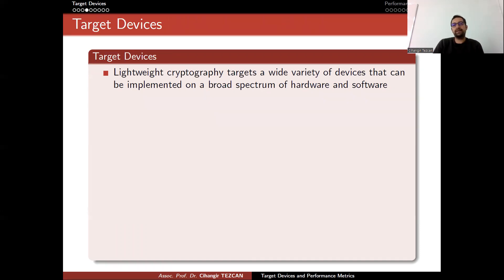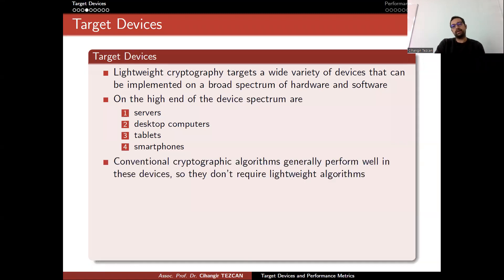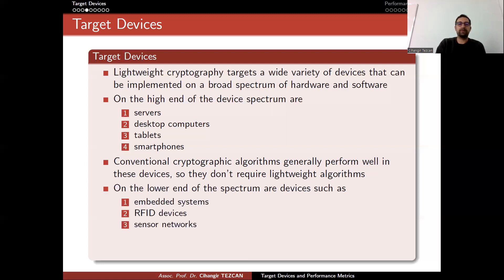On the high end of the device spectrum are servers, desktop computers, tablets, and smartphones. These are not constrained devices, so they can run many complicated algorithms and we don't have a problem there. Conventional cryptographic algorithms generally perform well on these devices — they don't require lightweight algorithms because we have very fast CPUs and gigabytes of memory. Having a very light algorithm is not a desired property for desktop computers or laptops.